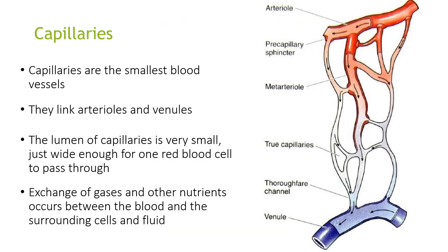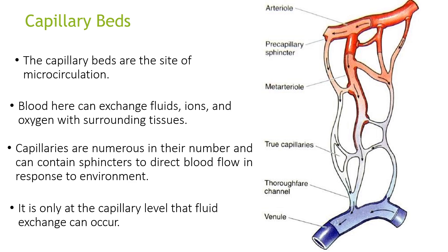Capillaries are the smallest blood vessels and link arterioles and venules. The lumen of capillaries is very small — just wide enough for one red blood cell to pass through. Exchange of gases and other nutrients occurs between the blood and the surrounding cells and fluids. Capillary beds are the site of microcirculation, where blood can exchange fluids, ions and oxygen with surrounding tissues. Capillaries contain sphincters to direct blood flow in response to the environment, and it is only at the capillary level that fluid exchange can occur.